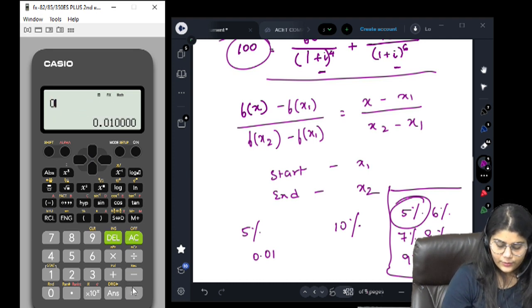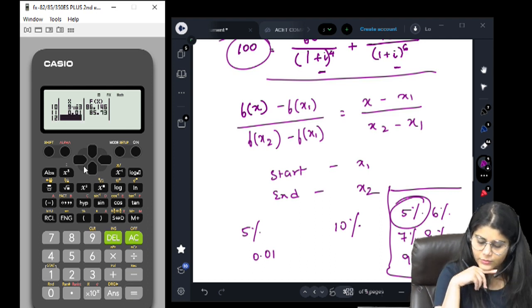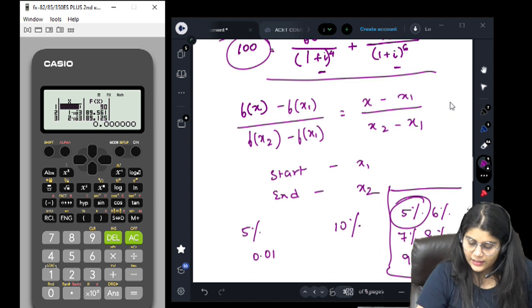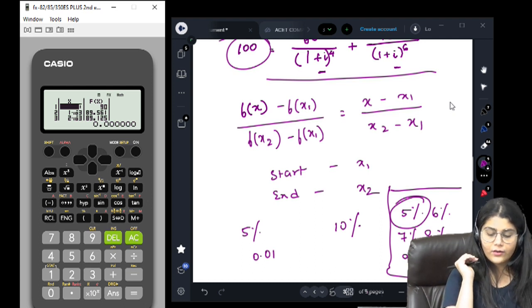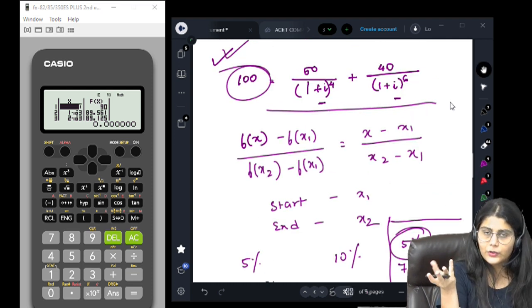It means, actually, the equation which I have written is going into negative, because even at 0 we are not getting an answer. This was just because I randomly took this equation.